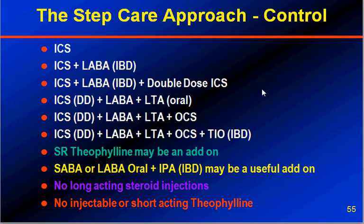Still not controlled — ICS double dose, LABA, leukotriene modifier plus oral corticosteroids. If still not controlled, add the other bronchodilator, the anti-muscarinic agent tiotropium. Sustained-release theophylline may be an add-on drug at that stage, after 5 or 6 steps. Ipratropium bromide may be useful add-on drugs to control asthma. No long-acting steroid injections, and no injectable or short-acting theophylline at all.